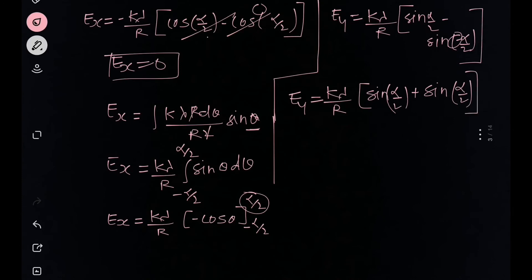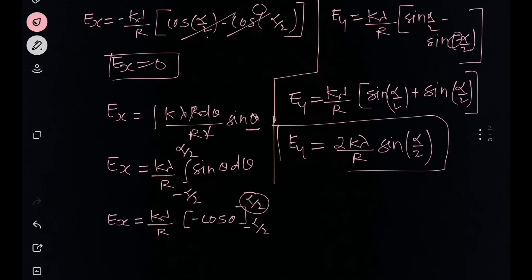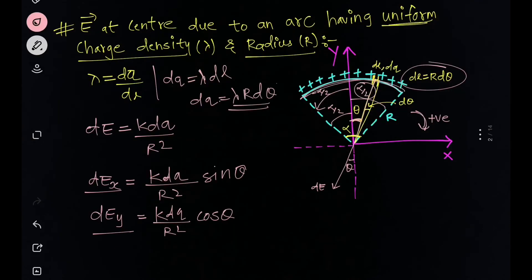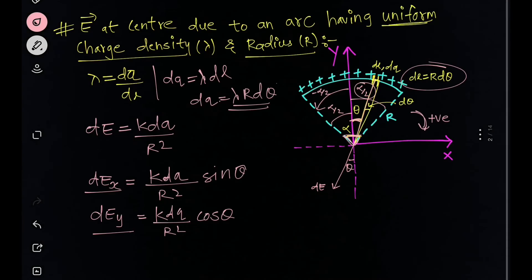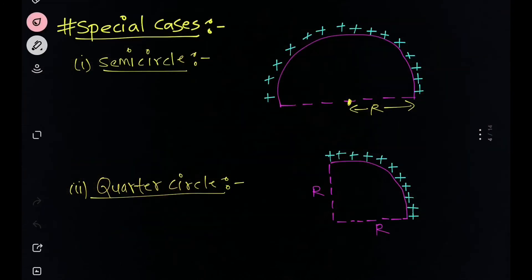For Ey, integrating cos(θ) gives sin(θ), evaluated from −α/2 to +α/2. We get (kλ/r)·[sin(α/2) − sin(−α/2)]. Since sine is an odd function, sin(−θ) = −sin(θ), so this becomes (kλ/r)·2sin(α/2). Therefore Ey = 2kλ/r·sin(α/2). This is the important result you should remember.